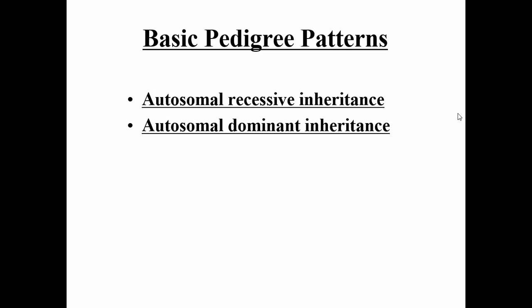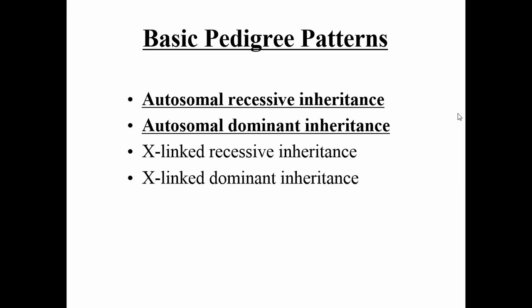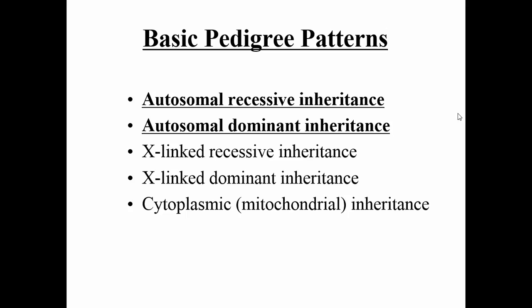The second type is autosomal dominant — again, autosomal, chromosomes 1 through 22. Dominant means you only need one copy of the mutant allele to see the expression of the mutation in the individual, to see it in their phenotype. Those are the two we're going to focus on today. Other ones in future lectures include X-linked recessive, where the mutant allele is located on the X chromosome; X-linked dominant, where you only need one copy on the X chromosome to express the phenotype; Y-linkage; and cytoplasmic or mitochondrial inheritance. But today let's focus on autosomal recessive and autosomal dominant.